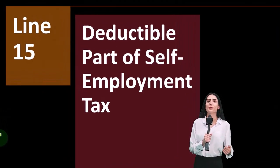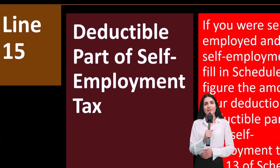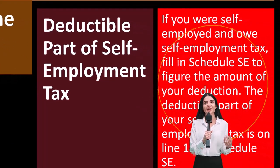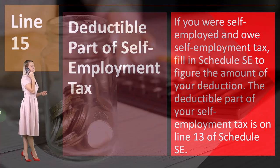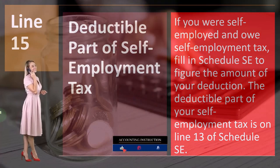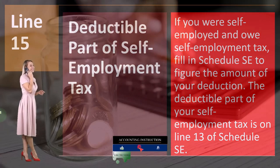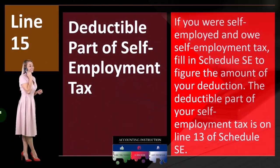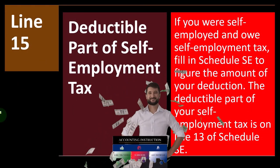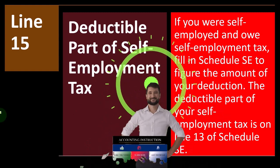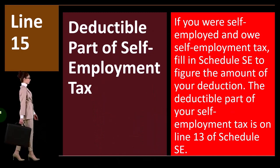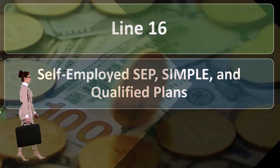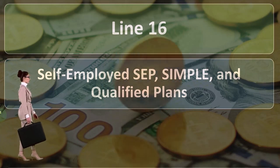Line 15 is the deductible part of self-employment tax. If you were self-employed and owe self-employment tax, fill in Schedule SE to figure the amount of your deduction. The deductible part of your self-employment tax is on line 13 of Schedule SE. If you have a Schedule C, the bottom line net income is used to calculate not only your income tax but also your self-employment tax — Social Security and Medicare — and then half of that is generally the above-the-line deduction. Line 16 is self-employed SEP, SIMPLE, and qualified plans.